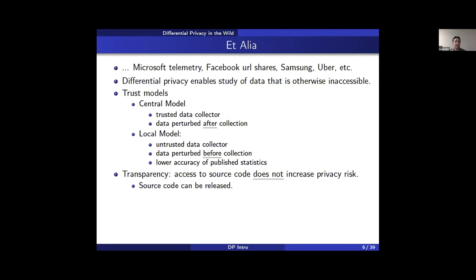The takeaway message is that differential privacy has an important selling point: it enables the study of data that you would not be able to access otherwise, even if you're a tech giant. There are two trust models. In the central model, a trusted data collector gets to see the real data and all perturbations happen after collection. In the local model, users do not trust the data collector, so data are perturbed before being sent — this gives more privacy but at a cost of lower accuracy.